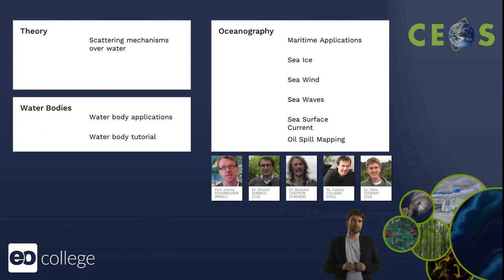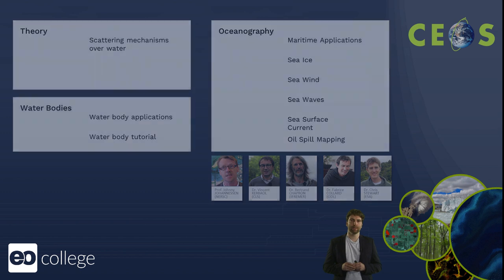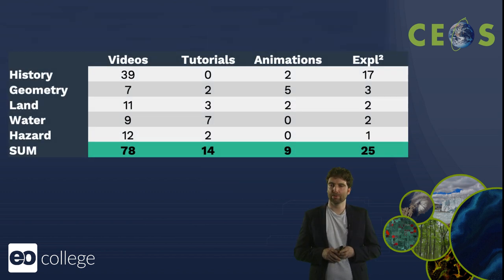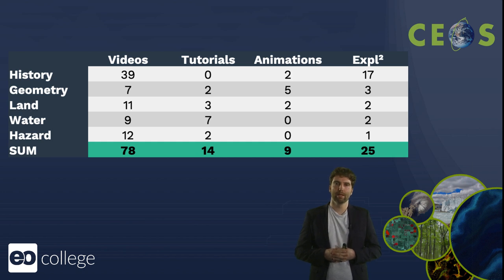Lesson four of Echoes in Space is dedicated to water applications — radar remote sensing over the ocean, water bodies, and oceanography such as sea ice, wind, and sea waves. The last lesson covers hazard applications like flood monitoring and seismic events. In total, we produced 78 videos, 14 tutorials, 9 animations, and 25 explorable explanations — interactive web content users can interact with in the browser. The course takes up to five weeks to complete.